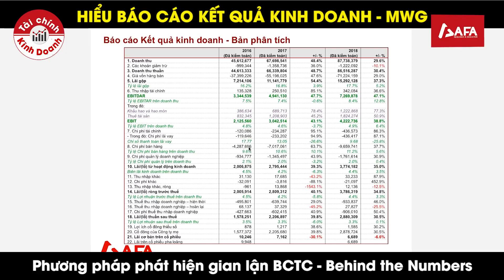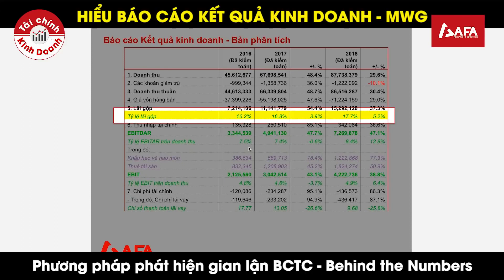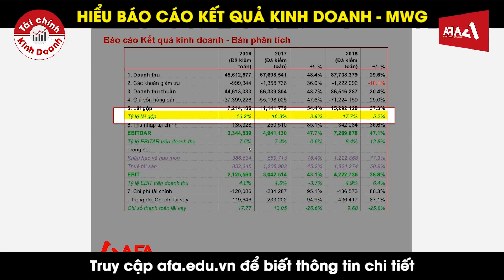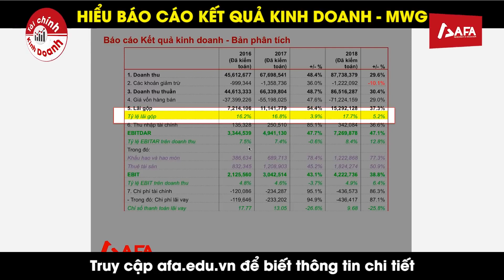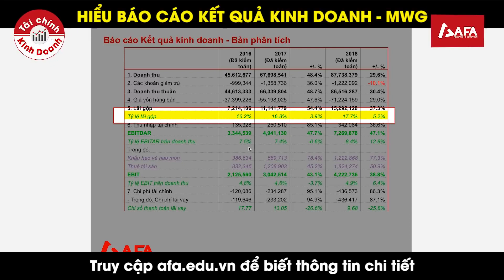Chỉ tiêu thứ hai là một chỉ tiêu rất quan trọng, đó là lãi gộp, và chúng ta tính toán tỷ lệ lãi gộp. Đối với một doanh nghiệp bán lẻ như công ty cổ phần Thế Giới Di Động, tỷ lệ biên lãi gộp đóng vai trò rất quan trọng. Nó cho thấy mức độ đàm phán của Thế Giới Di Động với các nhà cung cấp, nhà sản xuất như Apple, Samsung, Huawei, Xiaomi.